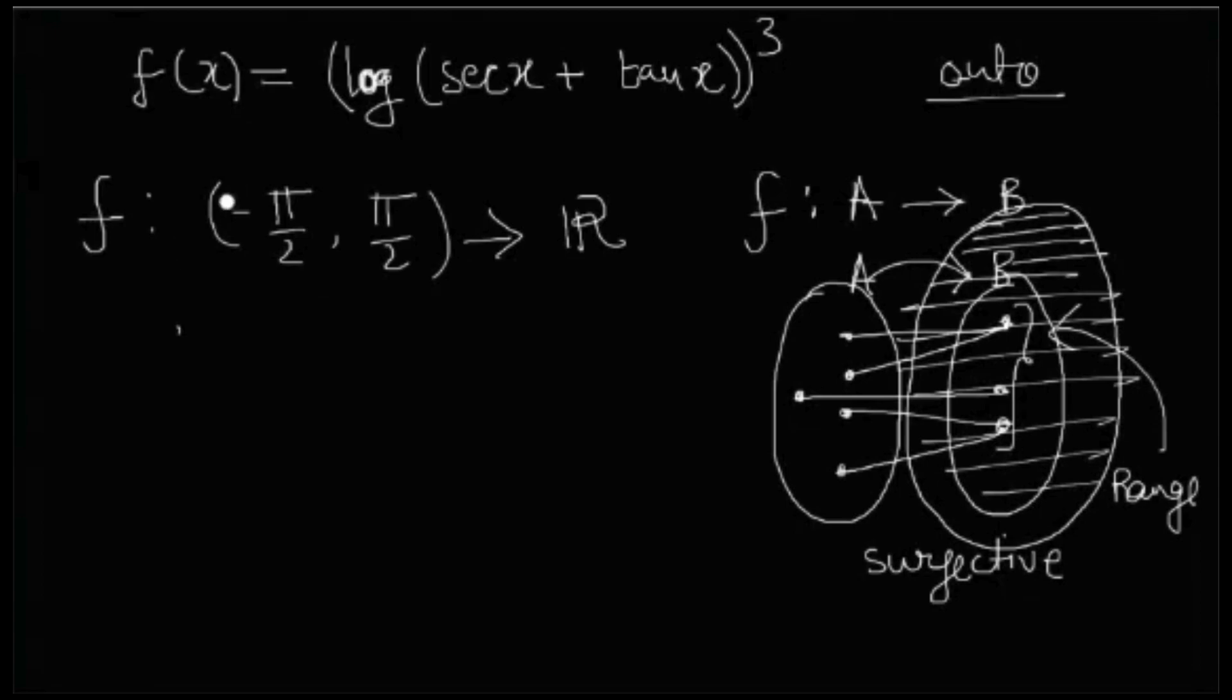If you put all the values of x between minus pi by 2 and pi by 2, and you can show that that particular set which you obtain is equals to R, then this function is surjective.